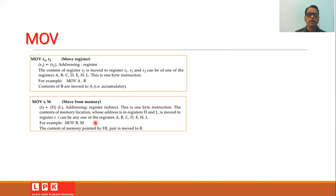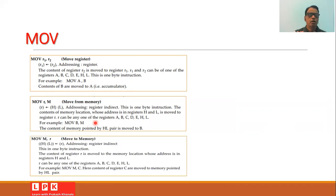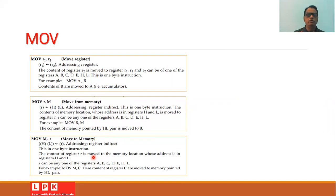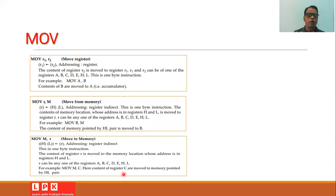Another form is MOV M, R, which moves the content of a register to memory. The content of register R is moved to the memory location whose address is stored in the HL pair. This uses register indirect addressing and is also a one-byte instruction. Register R can be A, B, C, D, E, H, or L. For example, MOV M, C moves the content of register C to the memory location pointed by the HL pair.